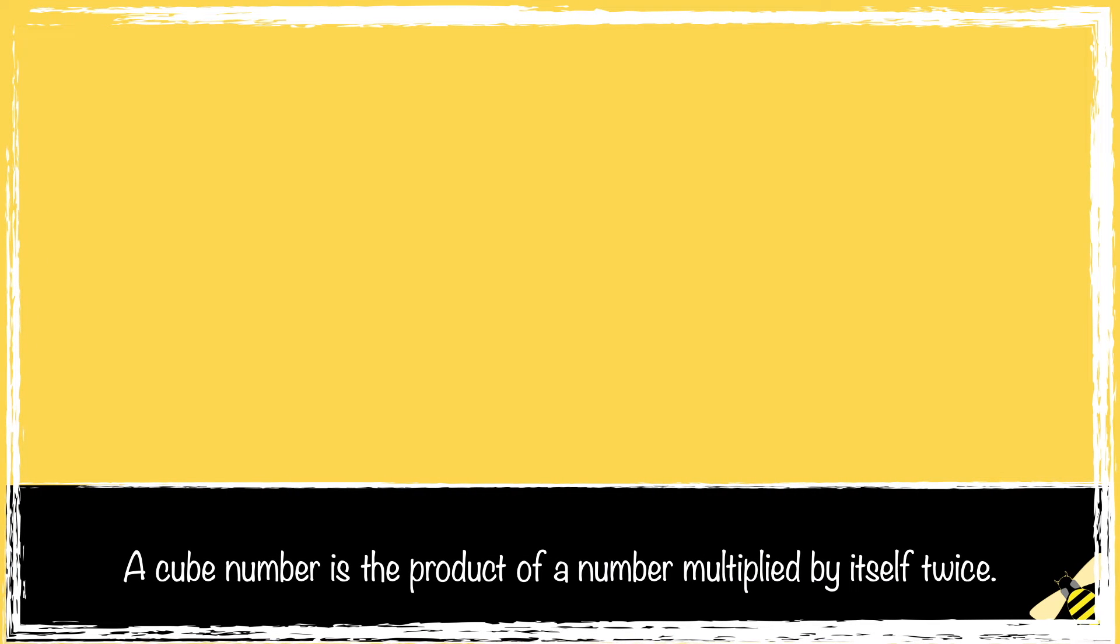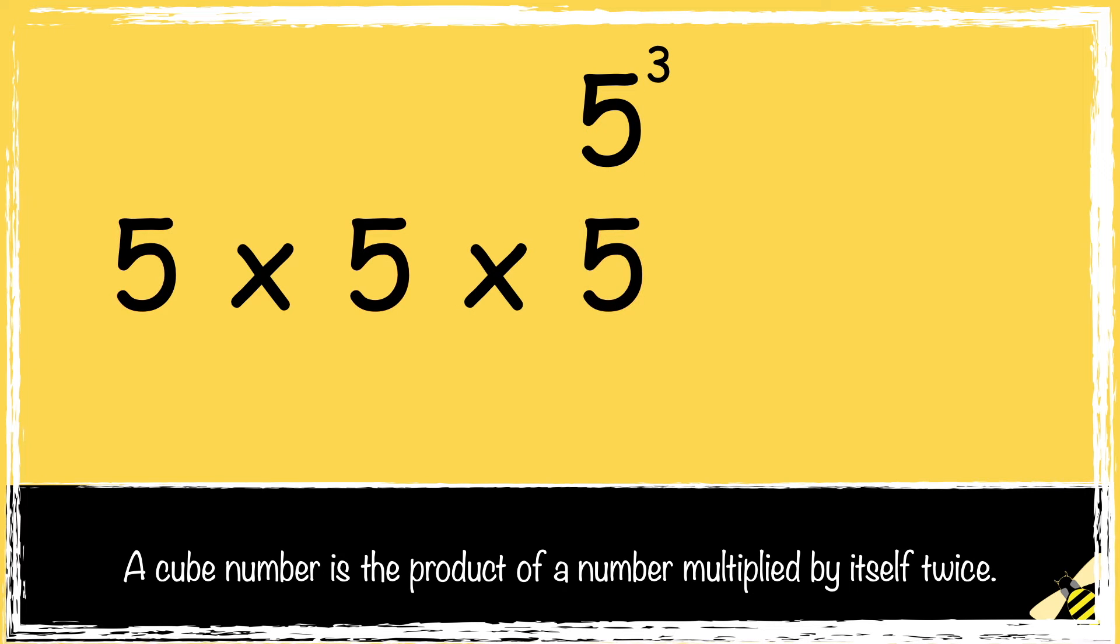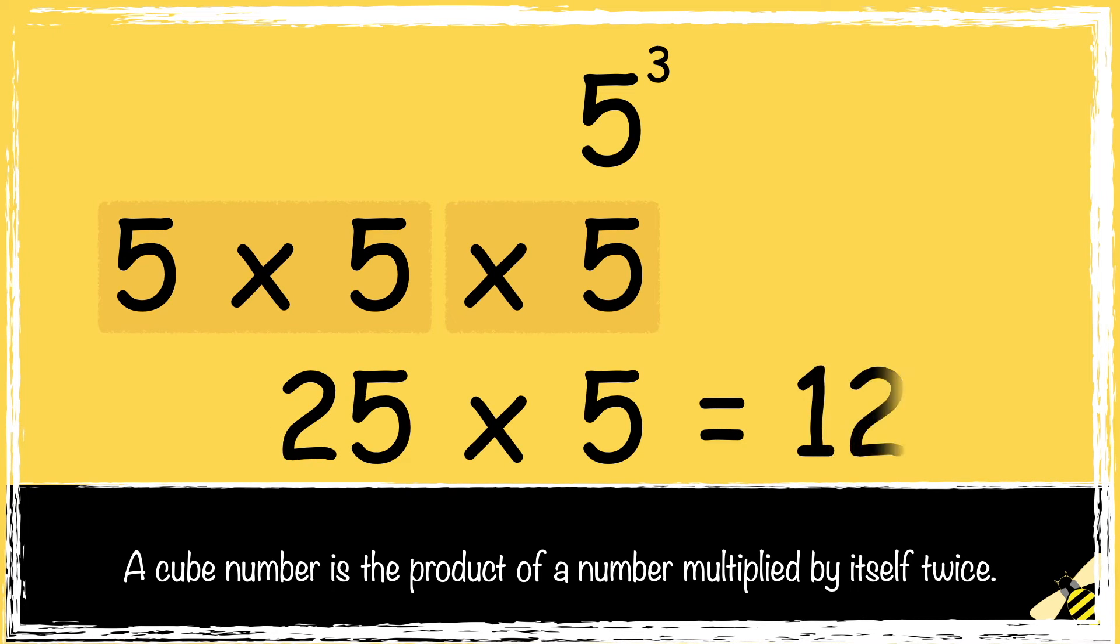Here's one more example. 5 cubed, which is 5 multiplied by 5 multiplied by 5. So first we work out the square number. 5 times 5, which is 25. Then we need to multiply 25 by the original number again. So 25 times 5 is 125. So 5 cubed is 125.